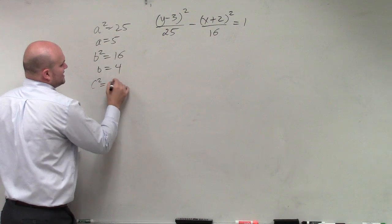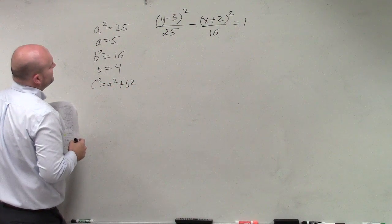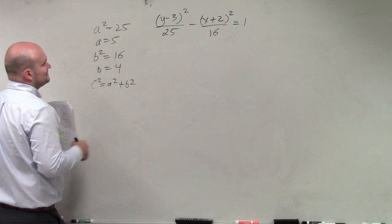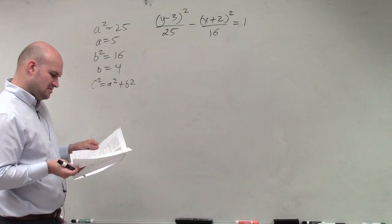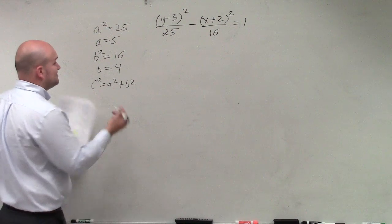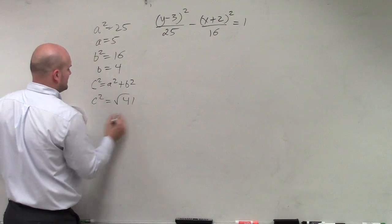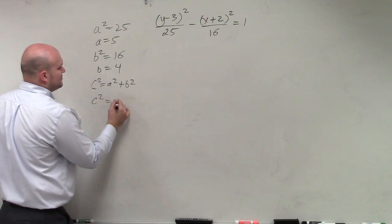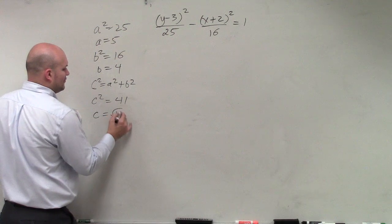c² equals a² plus b², which in this case is 41 again. The numbers are flipped but basically the same. Anyway, c² equals 41, so c equals the square root of 41.